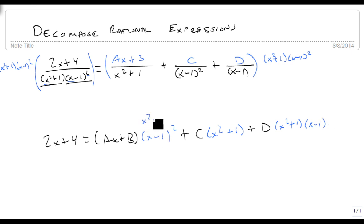Well, x minus 1 quantity squared is x squared minus 2x plus 1. And x squared plus 1 times x minus 1 is x cubed minus x squared plus x minus 1.